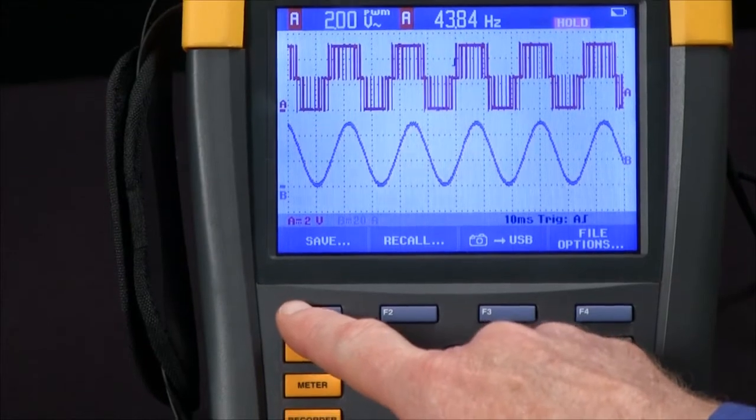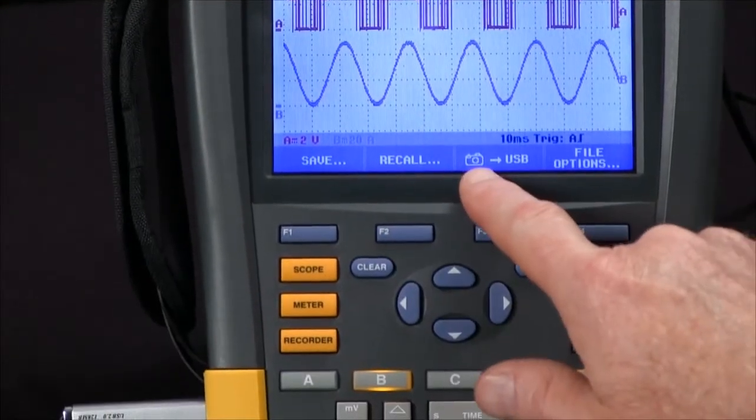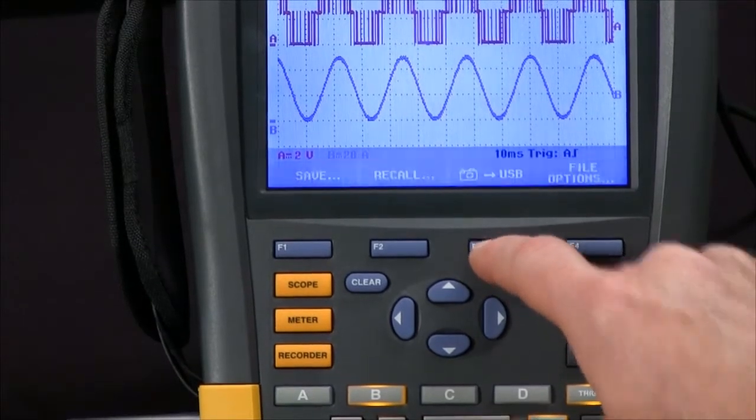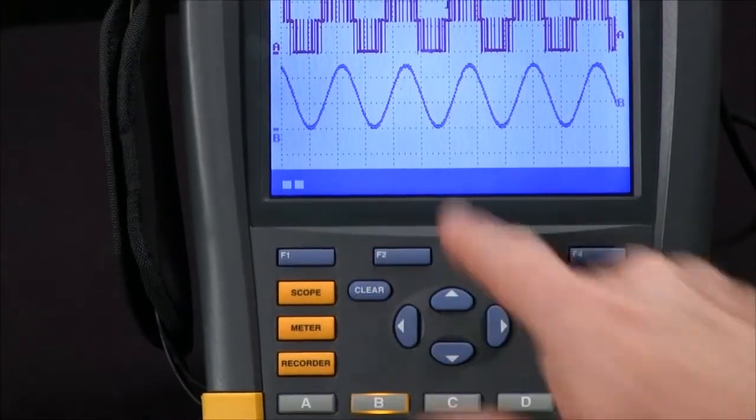Another way to save the information is to save a snapshot of the screen directly to the USB. If I hit the F3 key, we'll save a snapshot.